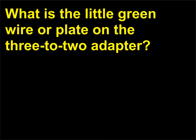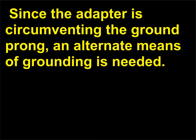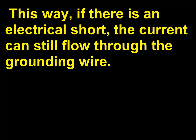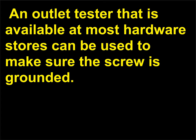What is the little green wire or plate on the 3 to 2 adapter? The green wire or metal tab attached to adapters is the grounding wire. Since the adapter is circumventing the ground prong, an alternate means of grounding is needed. If the screw on the outlet plate is grounded, the green wire on the adapter should be attached to it. This way, if there is an electrical short, the current can still flow through the grounding wire. If the screw is not grounded, then the adapter should not be used. An outlet tester that is available at most hardware stores can be used to make sure the screw is grounded.